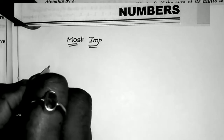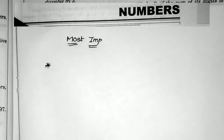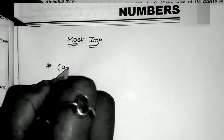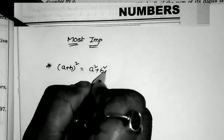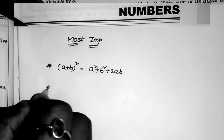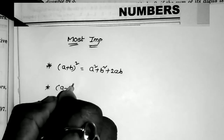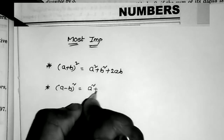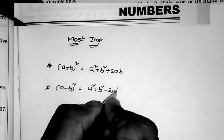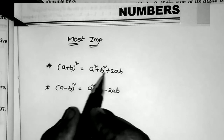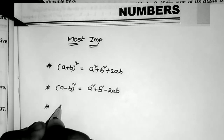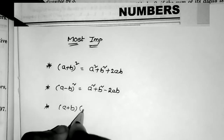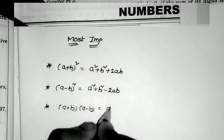Now I will express the most important formulas frequently used to solve problems in the numbers topic. First formula: (a + b)² = a² + b² + 2ab. Second formula: (a − b)² = a² + b² − 2ab. Third formula: (a + b)(a − b) = a² − b².